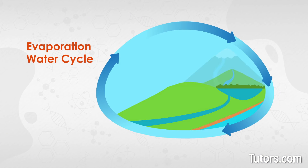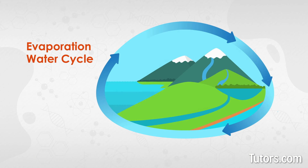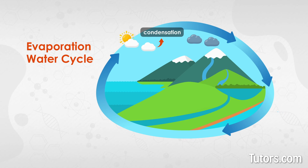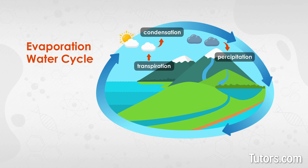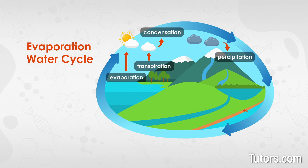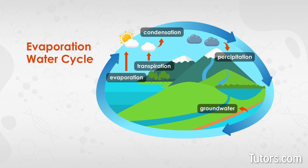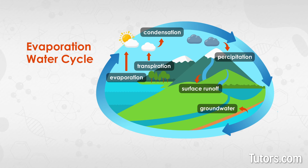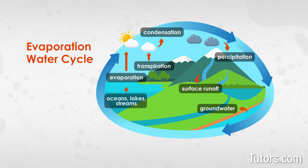Evaporation is a vital part of the water cycle on Earth. This cycle of condensation, precipitation, transpiration by plants, and evaporation continuously replenishes our fresh water supply. Without the step of evaporation, Earth's waters would either soak into the ground or remain in lakes, rivers, oceans, and streams.